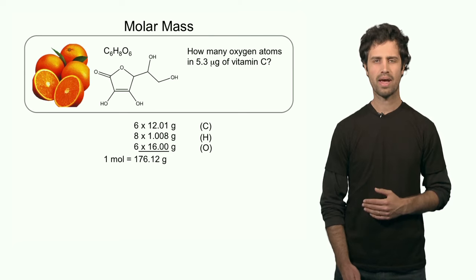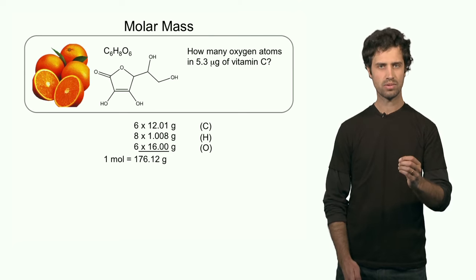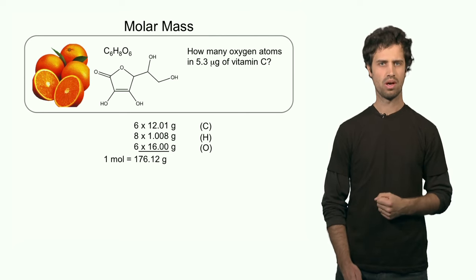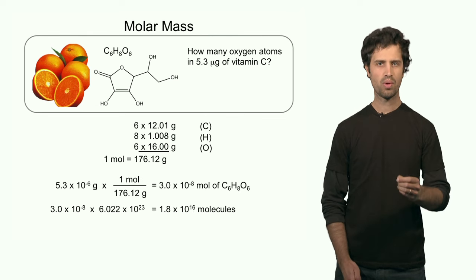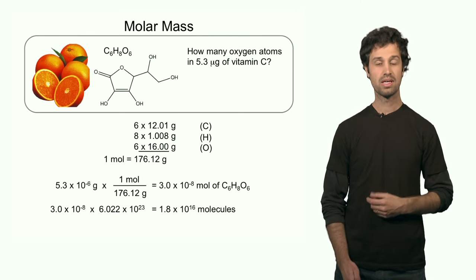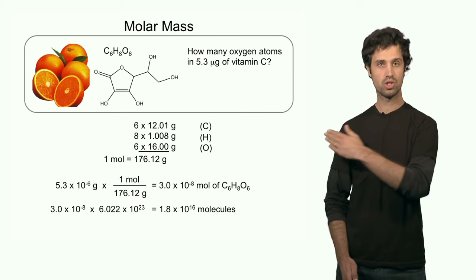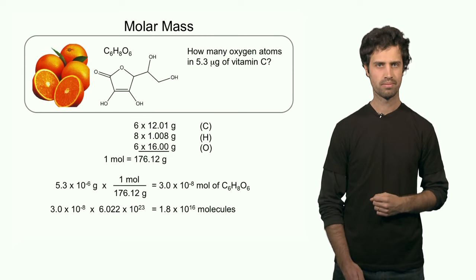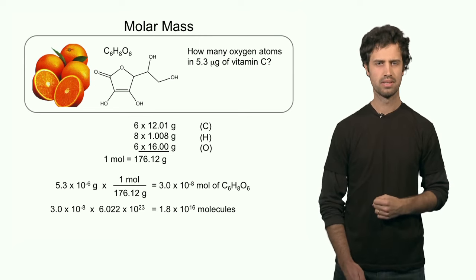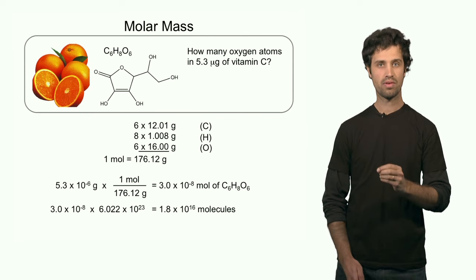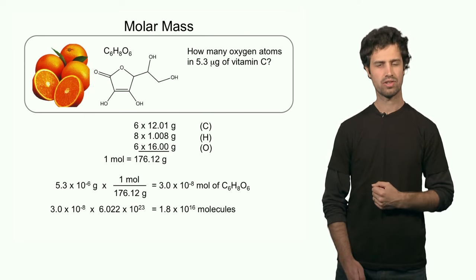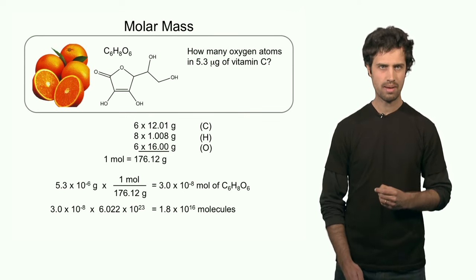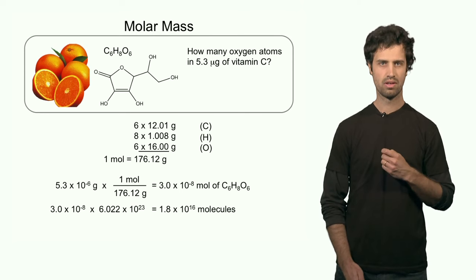I am going to use this molar mass to convert the amount in grams to the amount in moles — I want to determine how many moles of molecules I have. 5.3 times 10 to the minus 6 grams, times the unit factor with mole on top and grams at the bottom derived from this molar mass. The unit of grams cancels out and I get my answer in moles: 3.0 times 10 to the minus 8 moles of vitamin C.